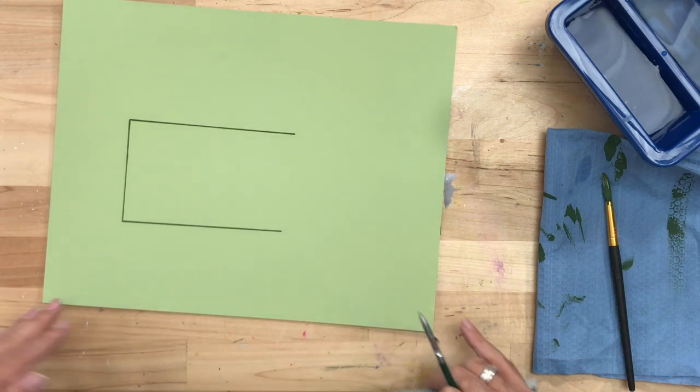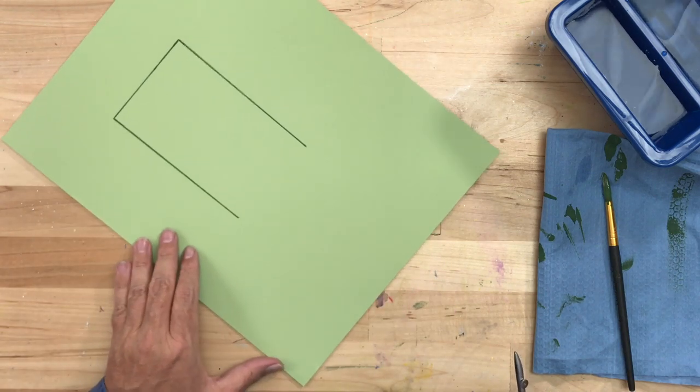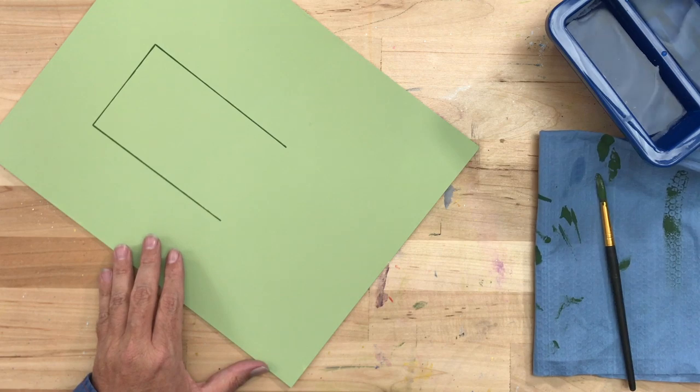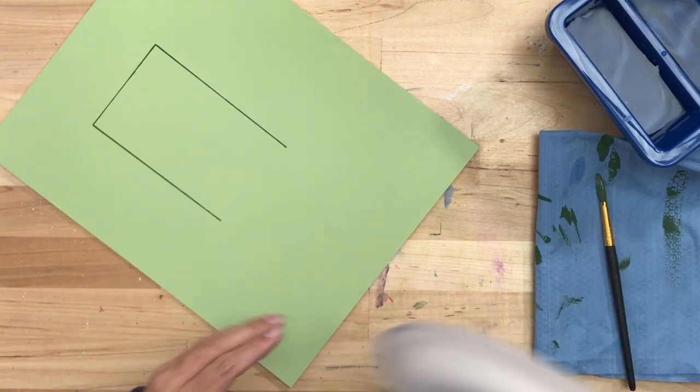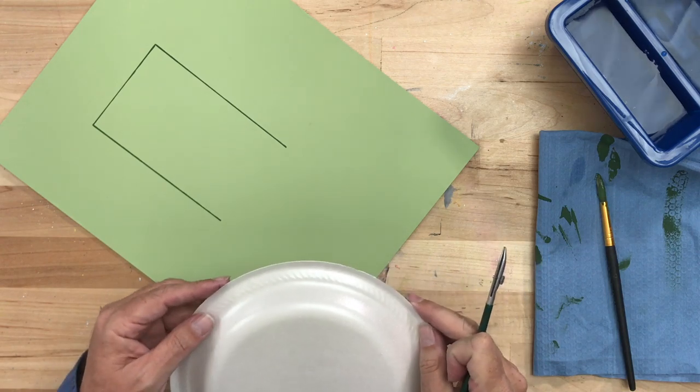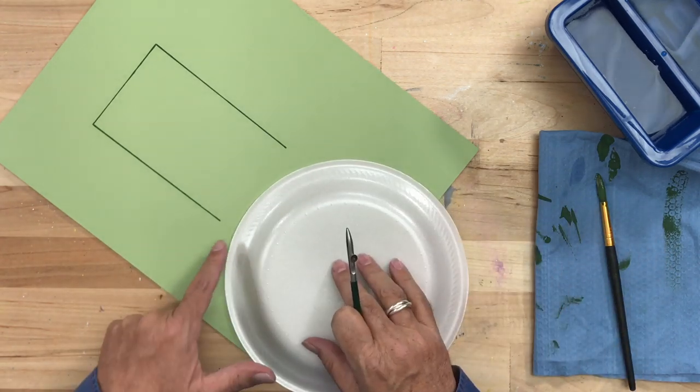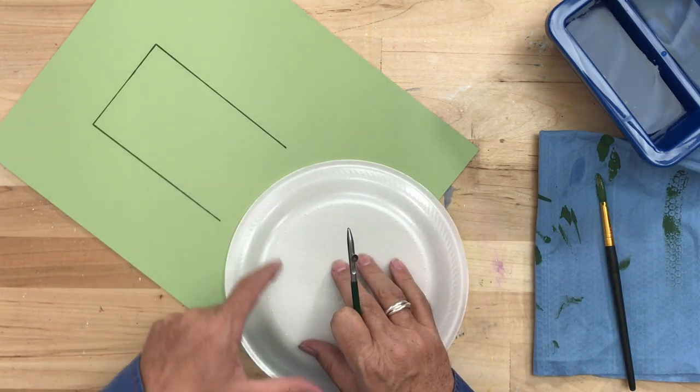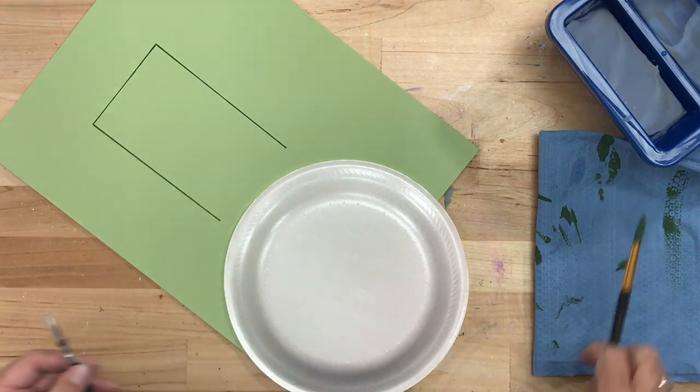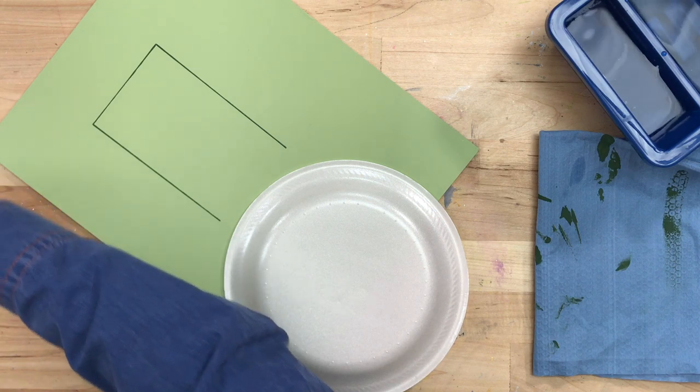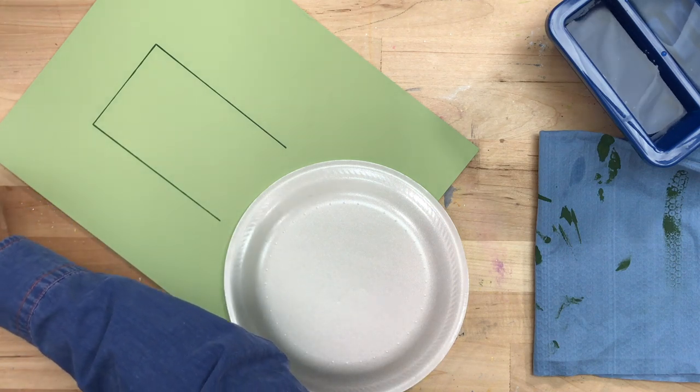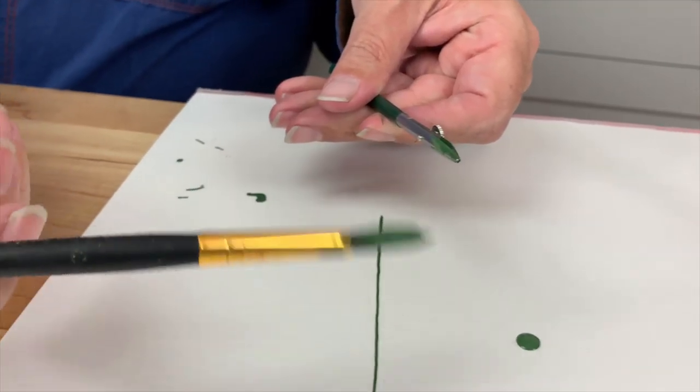As you can see you get perfectly even pinstripes. Now those were all done against a straight edge ruler, and there will be times when you will want a curved edge. You can use a set of French curves or I'm just going to use a styrofoam plate. When I put it down the edge of the plate is raised up so again it's not flush to the surface. You want to be able to have that space there.